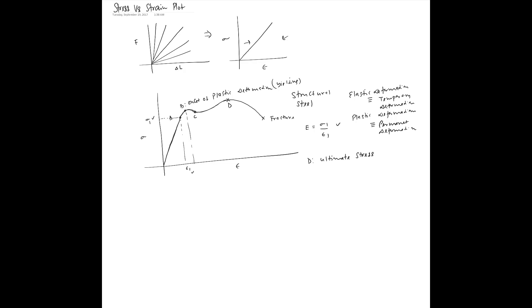The ultimate stress point is the largest stress that a ductile material like structural steel, aluminum alloy, or a copper-based alloy like brass or bronze could experience. After that, the stress decreases rapidly up to the point of fracture. For a ductile material, the fracture stress is actually less than the ultimate stress. From the start to point B is the elastic zone; beyond that is the plastic zone.